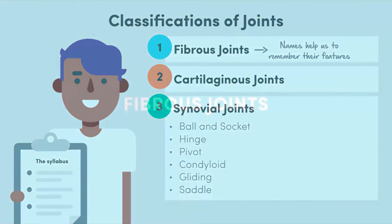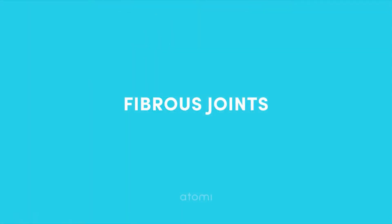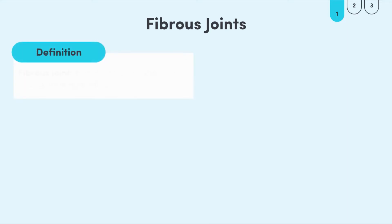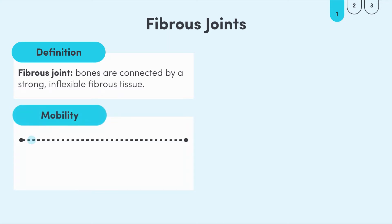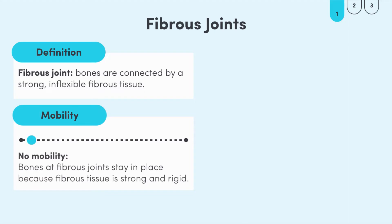Firstly, let's look at fibrous joints. This is an example of a joint whose name is based on how the bones are joined together, because fibrous joints are joints that are connected by a strong, inflexible fibrous tissue. There is no mobility in these joints — they simply join bones together and keep them there.